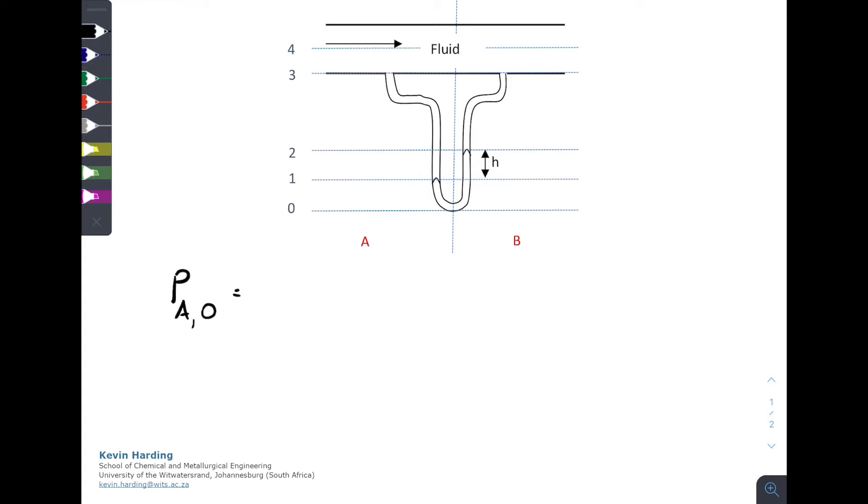In order to calculate that, we are going to have the pressure from point 0 to 1, and that will be the density of the manometer fluid, so I'll call it density of M, multiplied by GH, where H is from 0 to 1. We're then going to add the next pressure. We are then going to add from point 1 to 2, so that is now the density of the fluid in the pipe, GH from 1 to 2, so that is the second section.